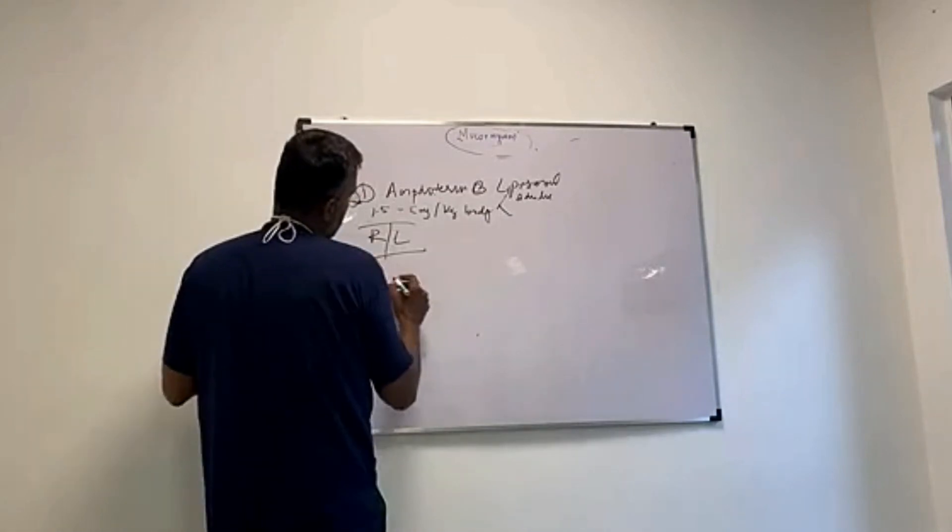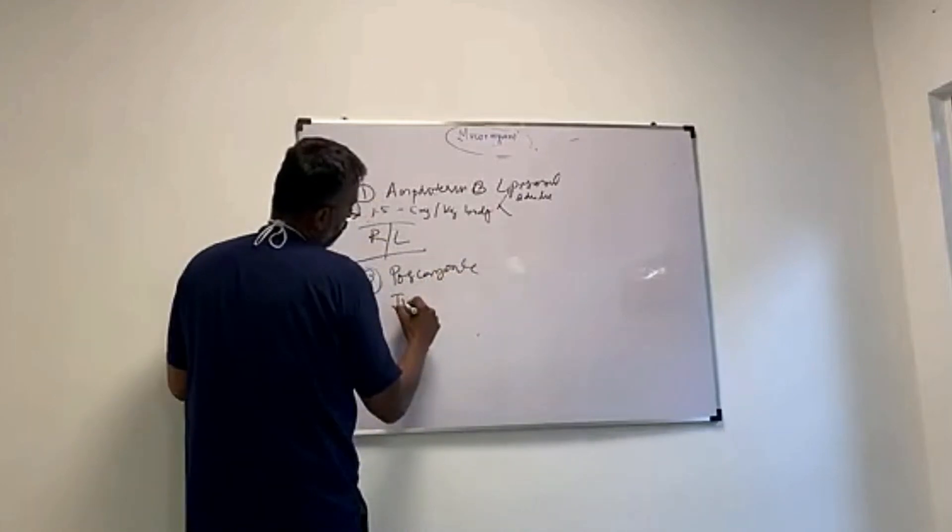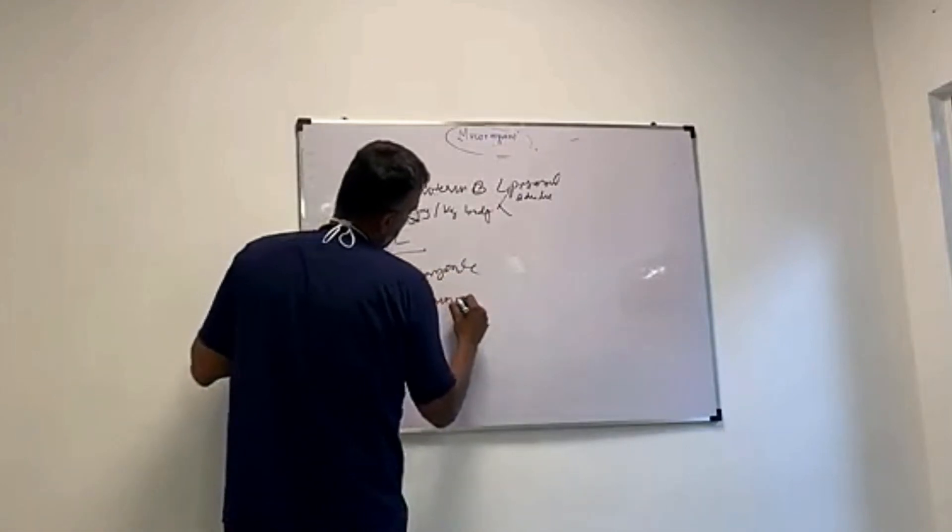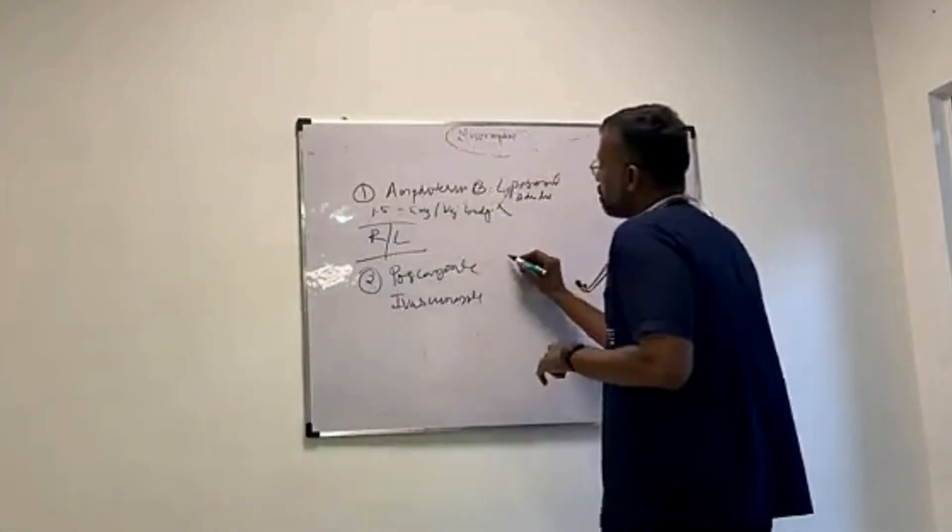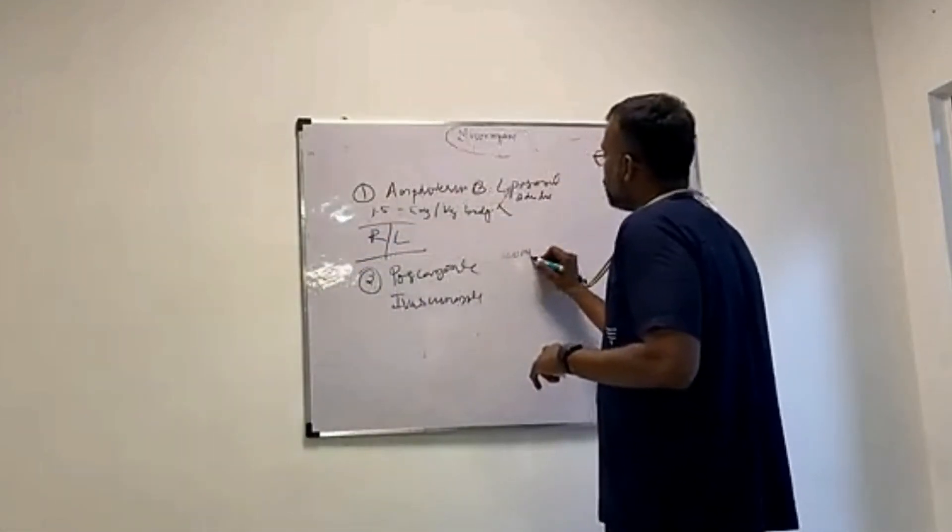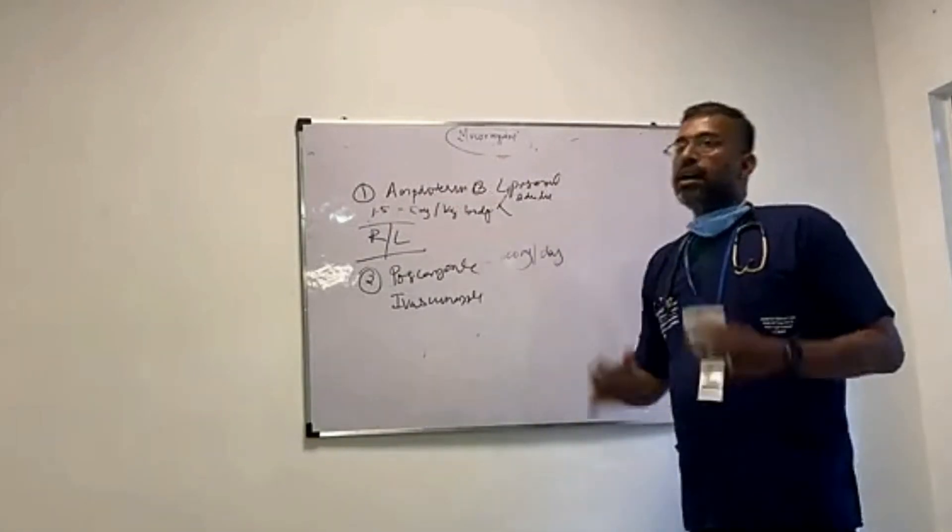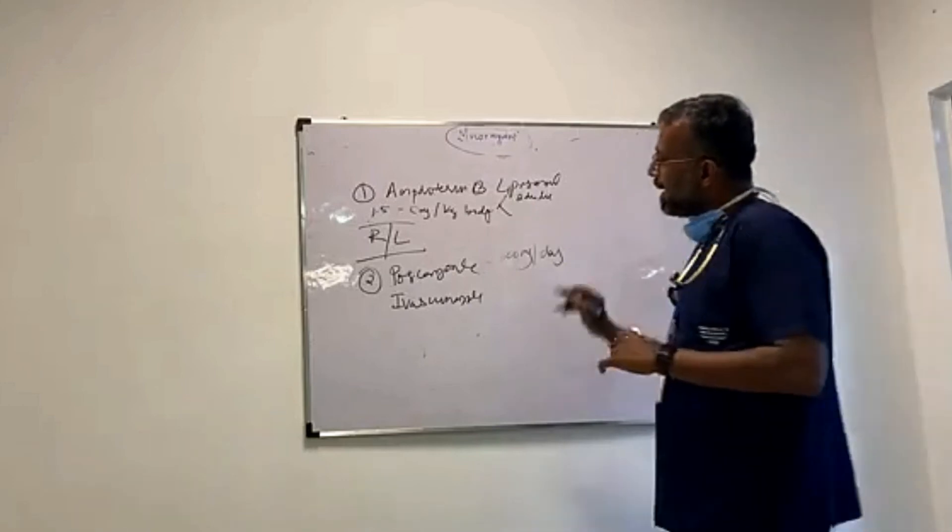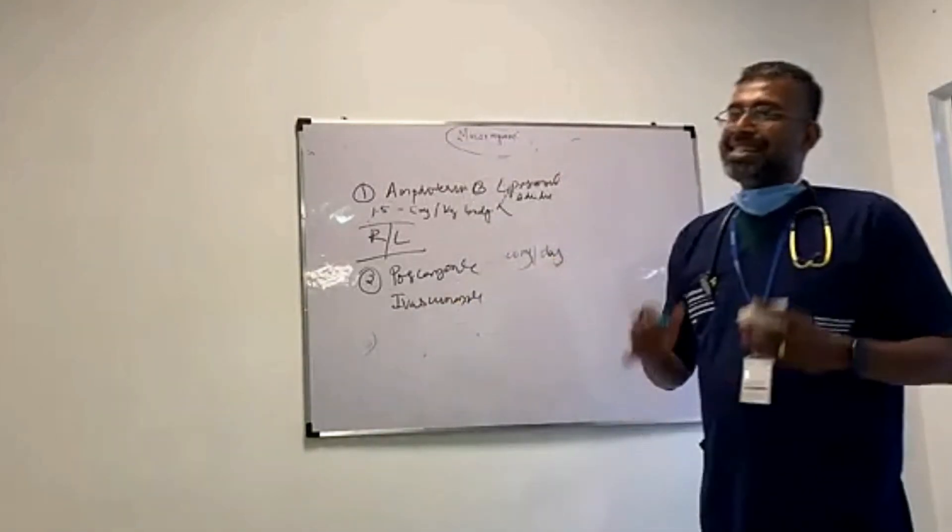And, after that, there is this drug called Posaconazole and Isavuconazole. The dosage of Posaconazole is 300 mg per day. It can be given in divided doses. And, then you have a lot of adjuvant treatments.